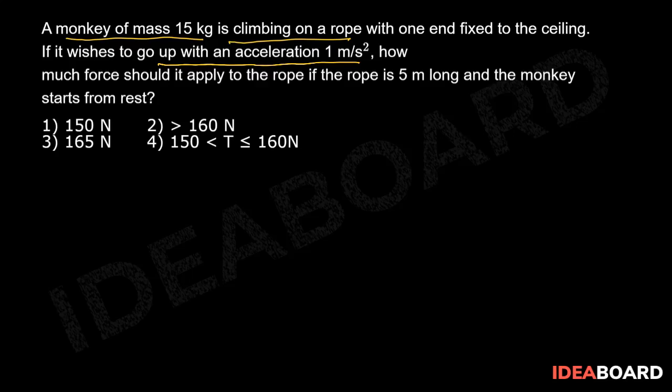So if we draw a free body diagram on the monkey whose mass is 15 kg, then its weight 15g acts vertically downwards and the pulling force given by the rope on the monkey will act vertically upwards.